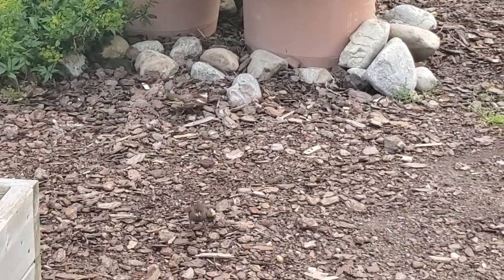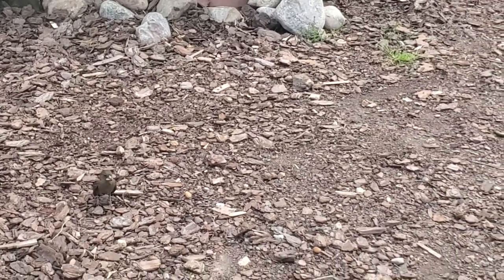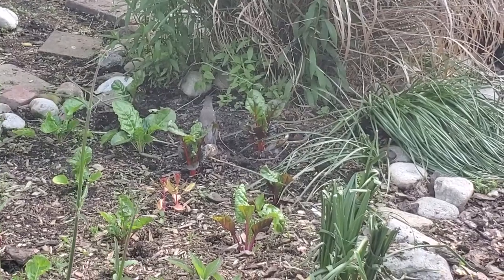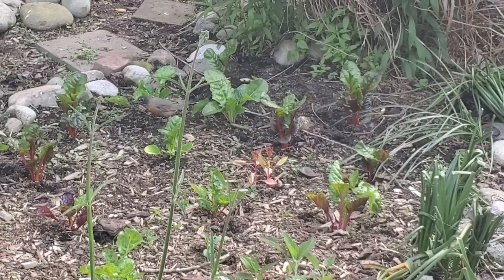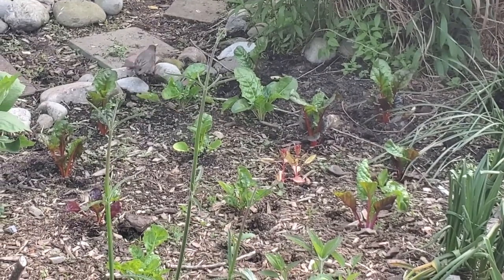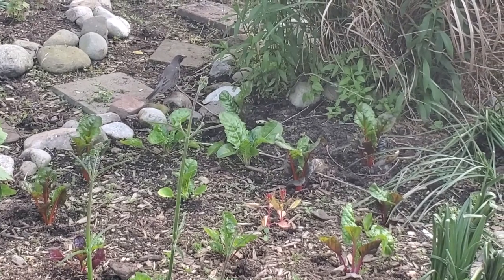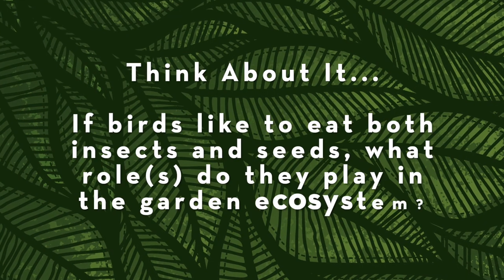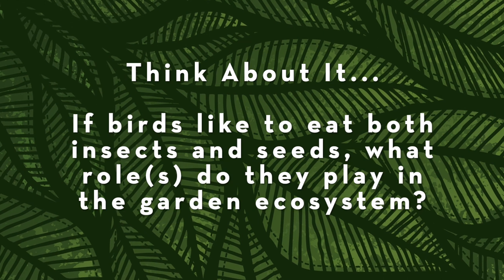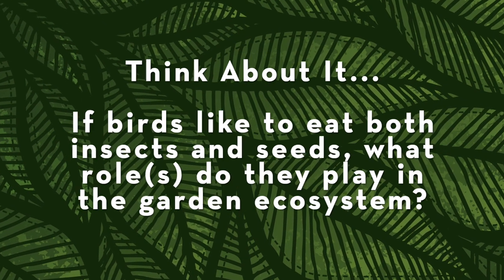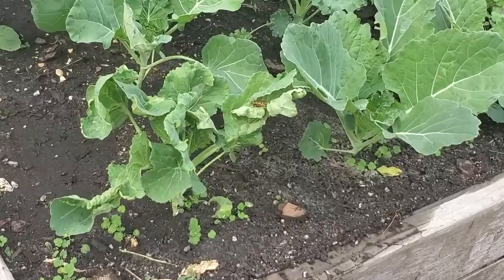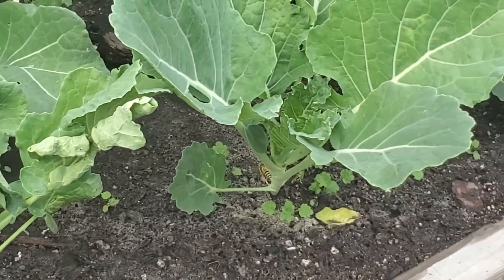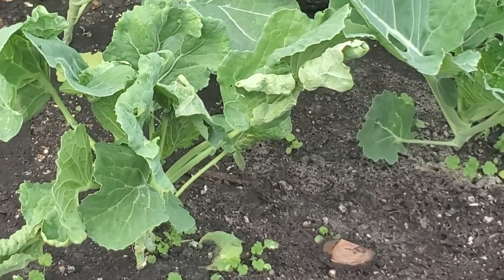Can you spot our two bird friends here? It looks like one of them has a little something in its mouth. Our bird friends are pretty active in our garden today. What our robin friend over here is doing is looking for food. Now what do we have here? I spot a yellow jacket, and if it's not pollinating our collards, it might be looking for eggs to prey on.